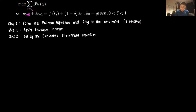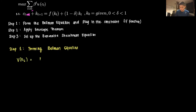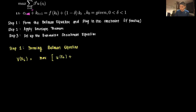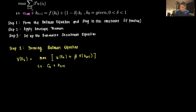Step 1: forming the Bellman equation. The Bellman equation is a value function: V(kt) equals the maximum of u(ct) plus beta times V(kt+1). This is subject to our resource constraint: ct plus kt+1 equals f(kt) plus (1 minus delta)kt, with k0 given.